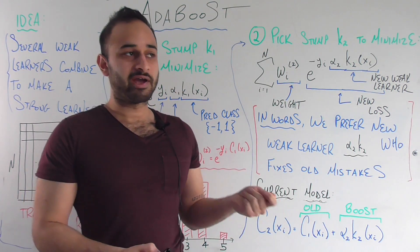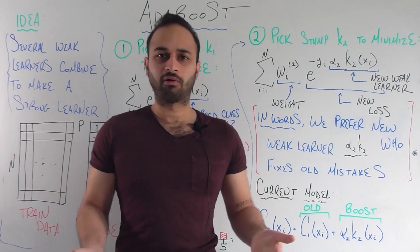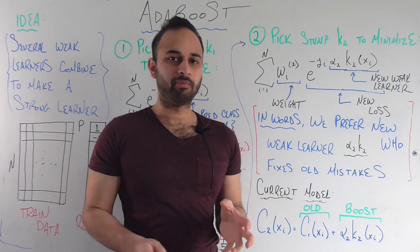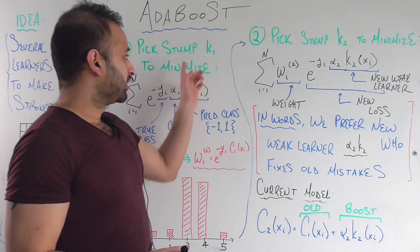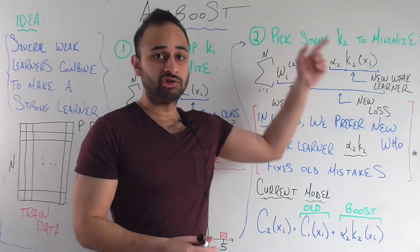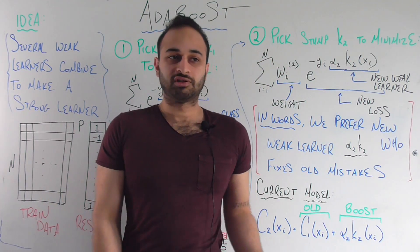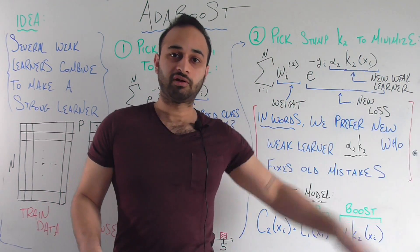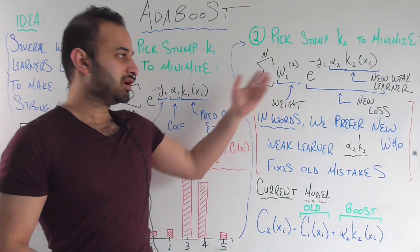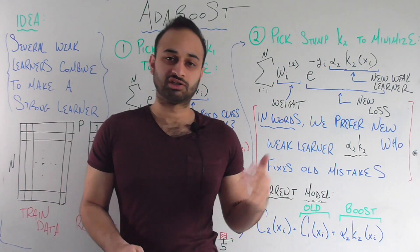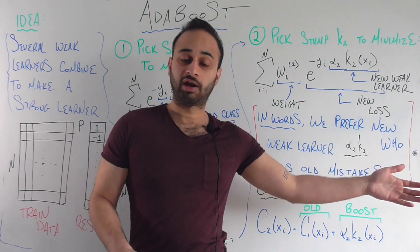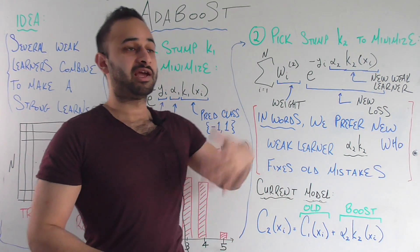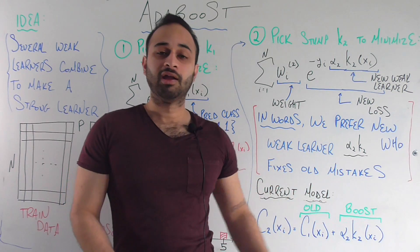And that is why Adaptive Boost is so elegant and so powerful — because at each step it's not building a very smart algorithm at all. If you think about K1 or K2 by themselves, they're not doing a good job. But because they're building on each other, you can imagine building a next weak learner K3, then K4.